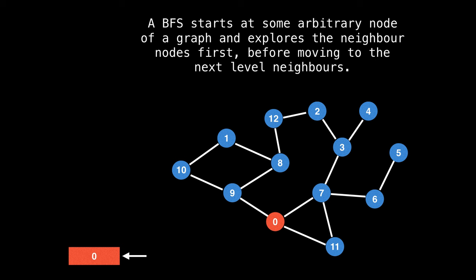So let's add zero to the queue. On the left, I will denote the current node in red. So zero is the current node, and we want to explore all of zero's unvisited neighbors and add them to the queue. So we would add 9 to the queue, 7 to the queue, and 11 to the queue. So zero has no more unvisited neighbors.